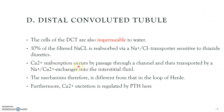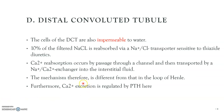Calcium reabsorption in the DCT happens by passage through a channel, and then gets transported by a sodium-calcium exchanger into the interstitial fluid. The interstitial fluid is next to the blood, next to the capillaries. The mechanism is therefore different from that in the loop of Henle. Furthermore, calcium excretion is regulated by the parathyroid hormone here in the DCT.